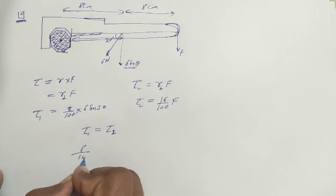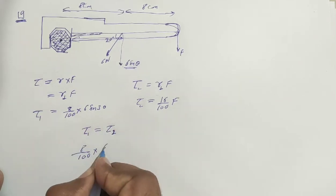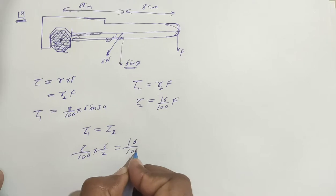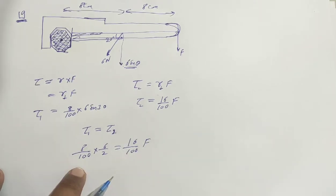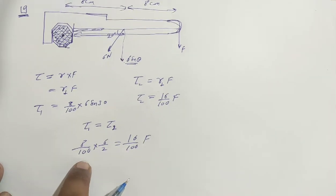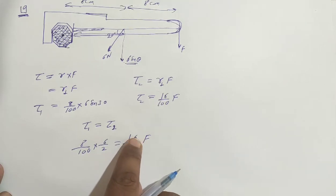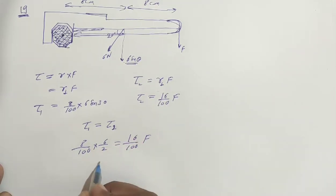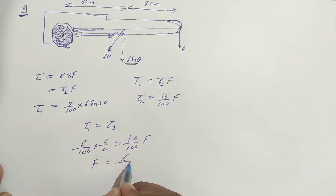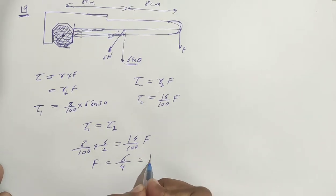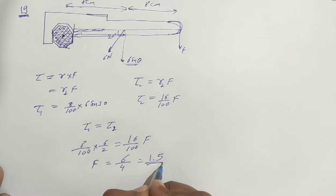8 by 100, 6 sin 30, 6 by 2 is equal to 16 by 100 into F. 100 100 cancel out. 8 divided by 2 is 4. So 6 by 4, answer is 6 by 4. 4 goes into 4 once, and 4 goes into 20 five times. So 1.5.